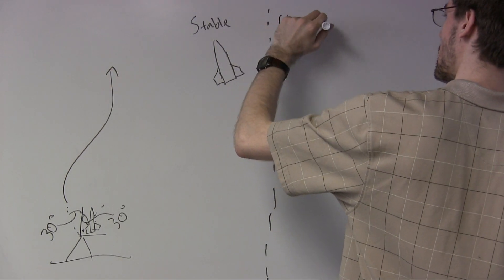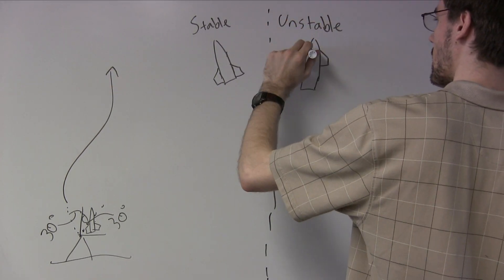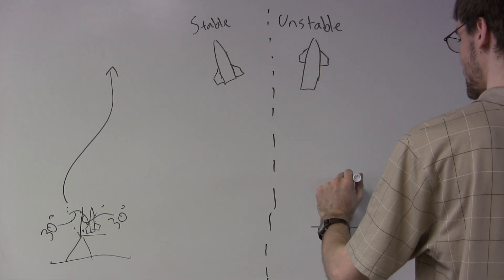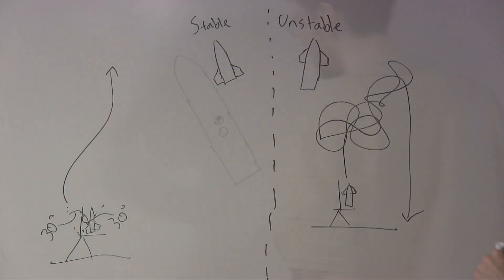it will perform a maneuver we call tumbling, in which it flips uncontrollably and unpredictably. This is unsafe for one thing, and it will also prevent the rocket from achieving its potential maximum altitude.